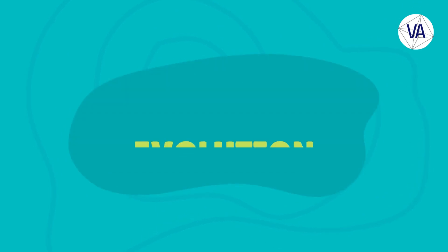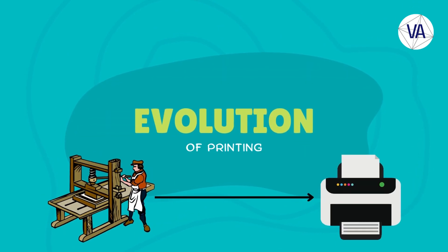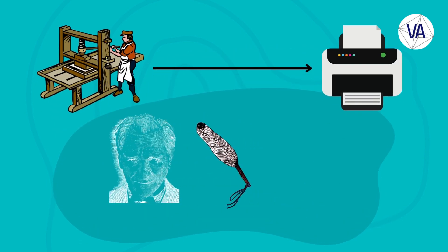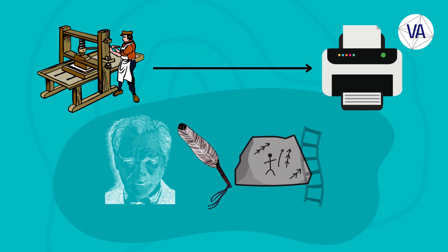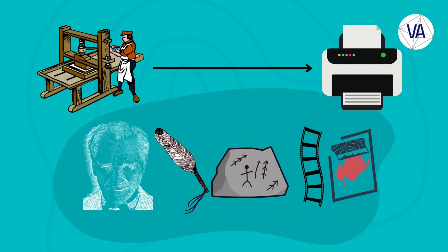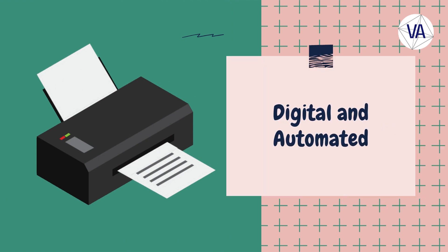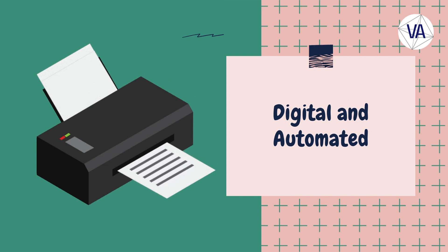Printing continued to evolve and diversify over the centuries, with new and lower-cost methods of image reproduction, such as engraving, etching, lithography, photography, and screen printing. Printing also became more digital and automated, with technologies such as photocopying, dot matrix printing, inkjet printing, laser printing, and 3D printing.